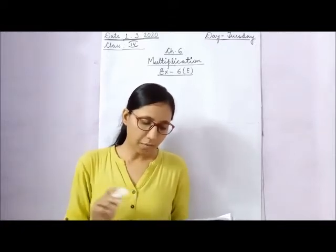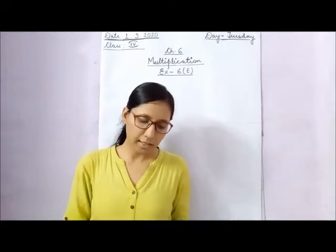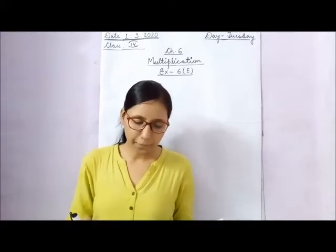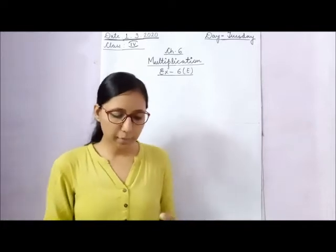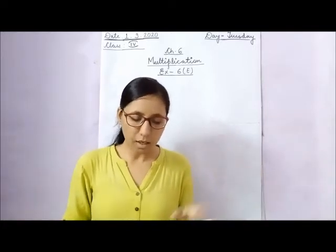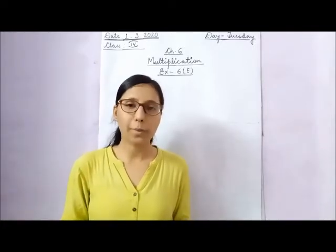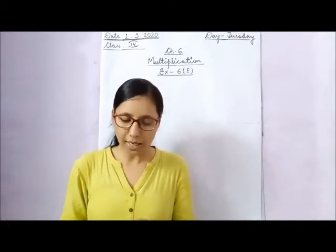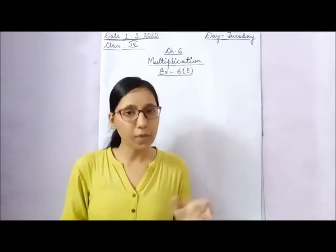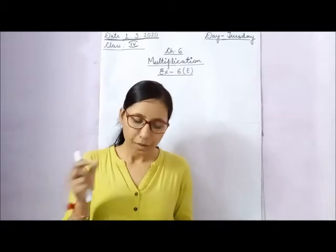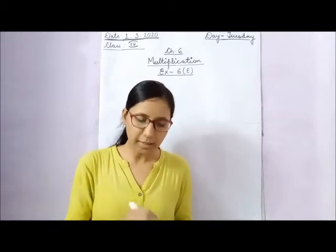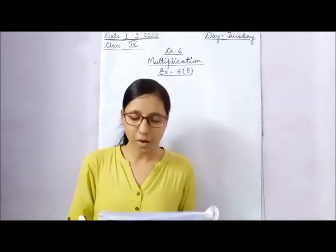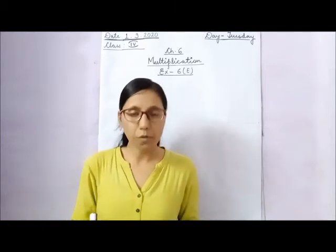Question 1: A building has 35 floors and each floor has 8 flats. How many flats are there in the building? The total number of flats is found by multiplying 8 by 35, and you will get the answer for the total number of flats.